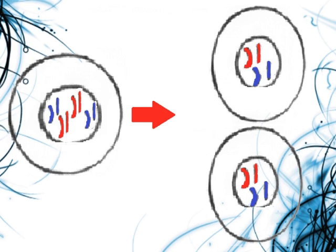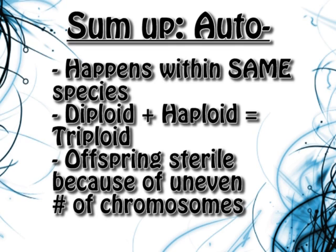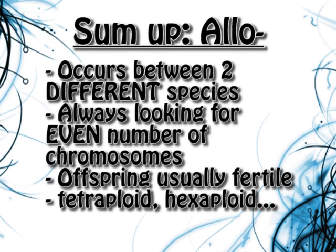Unlike autopolyploids, which as you saw earlier were uneven. To sum things up: for autopolyploids, remember that it happens within the same species. Keep an eye out for the word triploid, because that's usually the main indicator that this is most likely an autopolyploid — referring to the offspring. Also remember that the uneven number of chromosomes is what prevents the offspring from further reproducing. As for allopolyploids, remember that it's occurring between two different species. You are always looking for an even number of chromosomes, because that allows the offspring to continue meiosis and create more offspring. Keep an eye out for the words tetraploid and hexaploid, which refer to even numbers of chromosome sets.